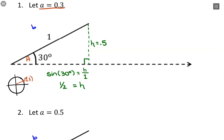This distance is 0.3. Imagine tying a string here — if I let it drop to the ground, it would be 0.5. If I cut that string to a length of 0.3, which is smaller than 0.5, the string would drop and stop before reaching the base line. If I swing it around, it's never going to intersect down there. We were given a side length that's too small — there is no triangle that fits.